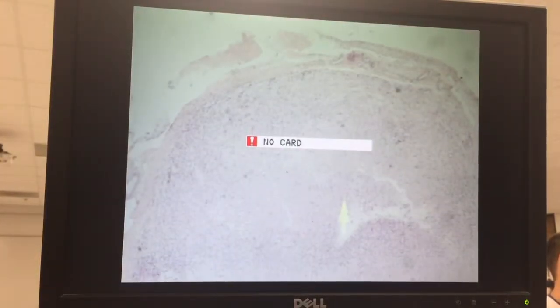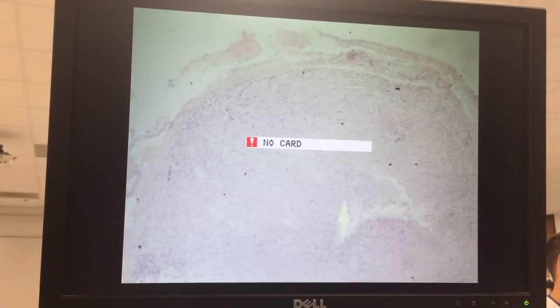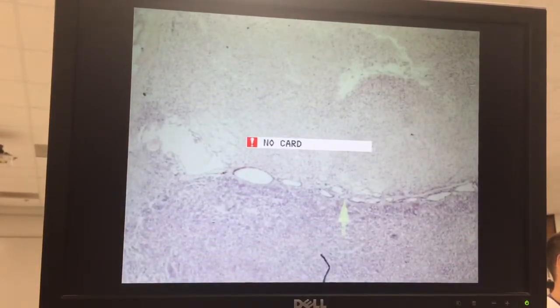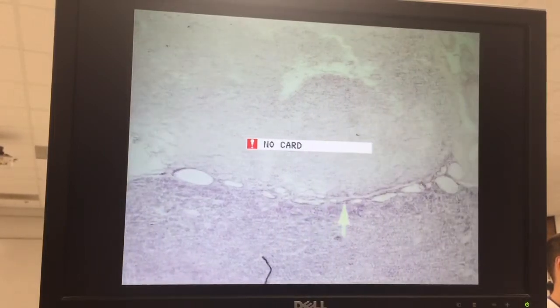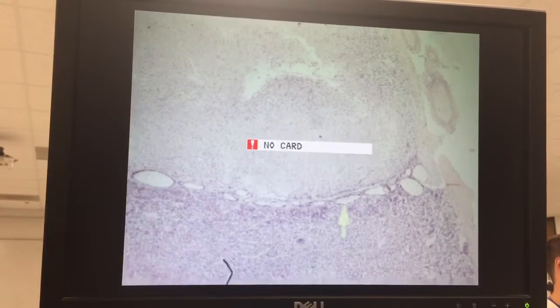This one appears to be a cross-section. There's the neurohypothesis. I can get this into focus. Here's pars intermedia. In fact, you can see those colloid-containing vacuoles and vesicles in there. This is all anterior pituitary.